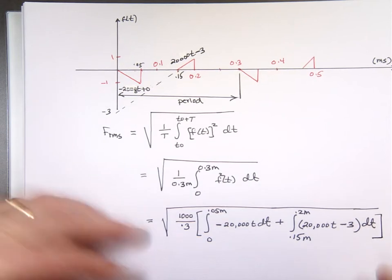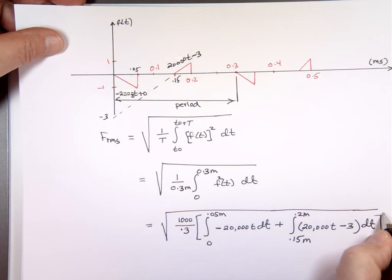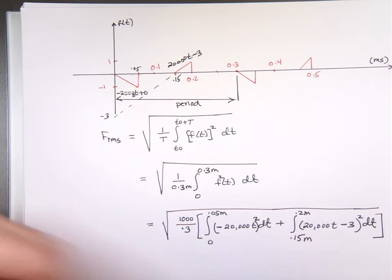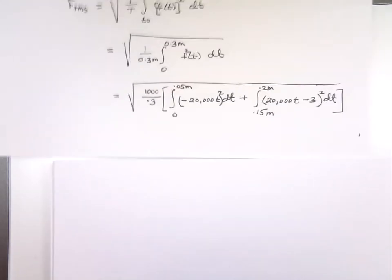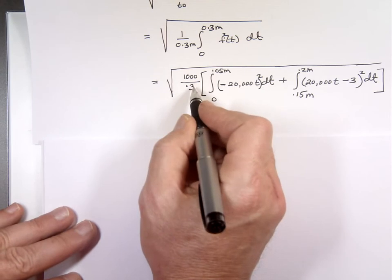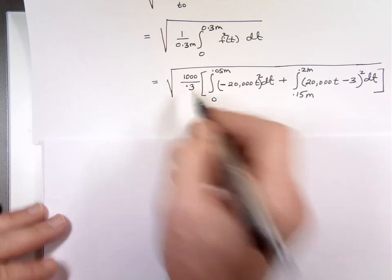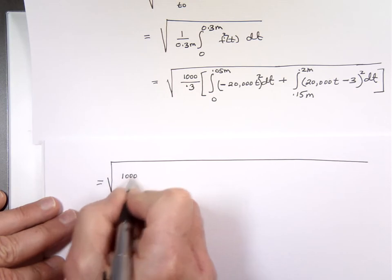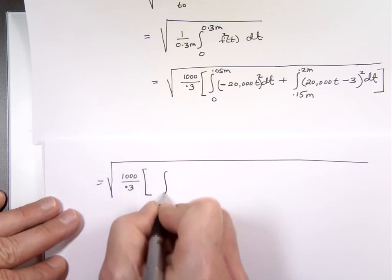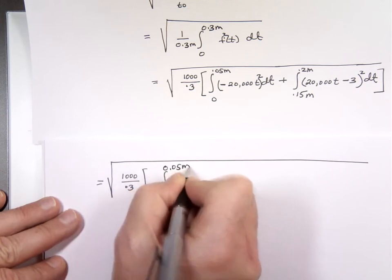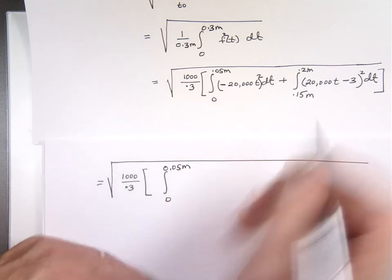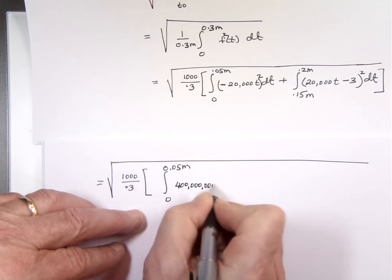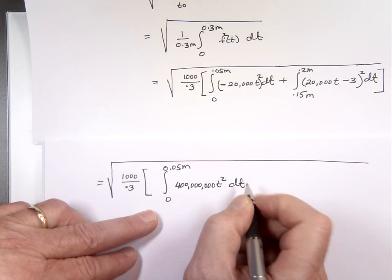Now we're going to integrate — put the square in first and integrate, then plug in the limits. Those numbers are going to be massive. When you square negative 20,000 you get 400 million. So the first piece gives 400 million times t², and for the second piece, using the FOIL method: 400 million t² minus 120,000t plus 9.